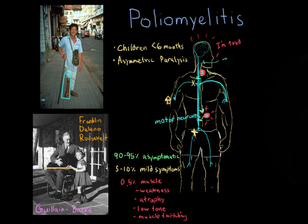Beyond the arms and legs, consider what happens if the muscles used in respiration — in breathing — are paralyzed. If these muscles are damaged, patients can no longer breathe on their own. This can be very debilitating and fatal if it affects the respiratory muscles.